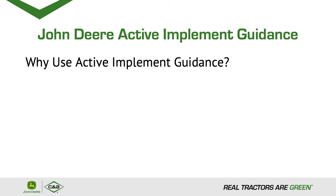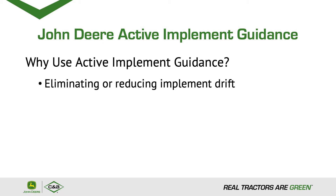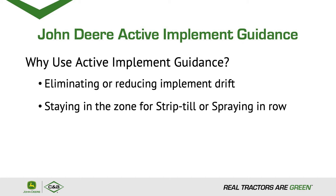Why use Active Implement Guidance? There are three main advantages of any implement guidance system. Number one: eliminating or reducing implement drift. Number two: staying in the zone for strip till or spraying in row. And number three: reducing operator stress.